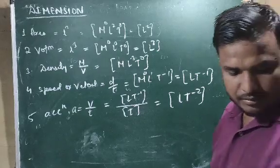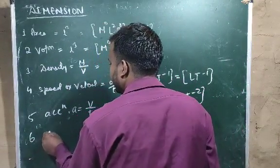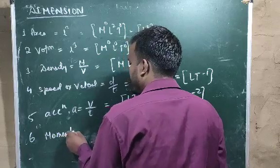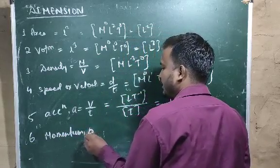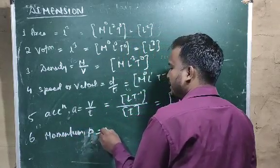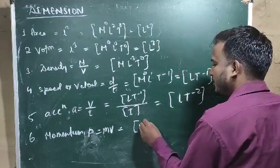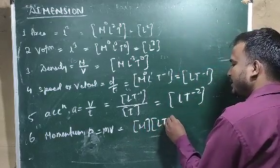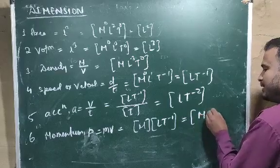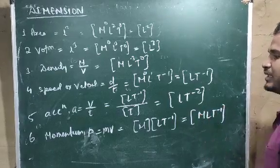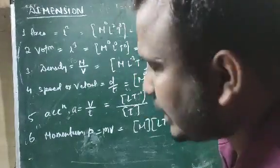Number 6 is momentum. The dimensional formula for momentum: the formula for momentum P equals mass into velocity. For mass it is M, and for velocity it is L T⁻¹, so the result will be M L T⁻¹. This is the dimensional formula for momentum.